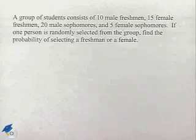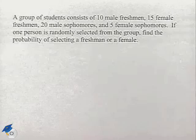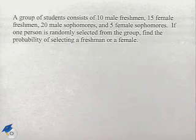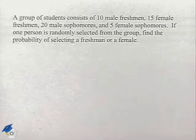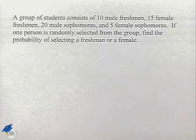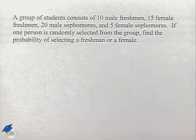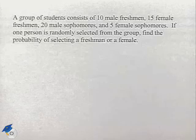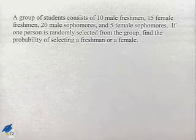Now here's another problem dealing with probability. A group of students consists of 10 male freshmen, 15 female freshmen, 20 male sophomores, and five female sophomores. If one person is randomly selected from the group, find the probability of selecting a freshman or a female.